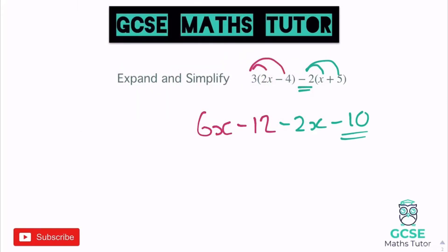Collecting it all together we've got 6x take away the 2x and that leaves us with 4x. And we've got negative 12 and negative 10 here. Negative 12 take away 10 is negative 22. And there's that expanded and simplified.